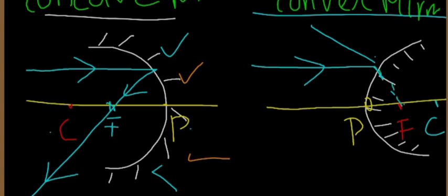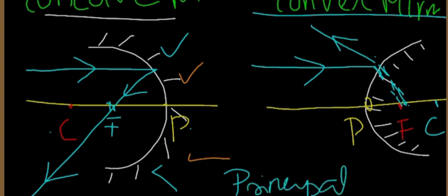You can use a scale of 1 cm to 1 cm for drawing. Mark the focus and center of curvature accordingly. The light should diverge from the principal axis after reflection. For any ray traveling parallel to the principal axis, after reflecting from the convex mirror, it diverges and appears to come from the focus. Students should practice this closely.